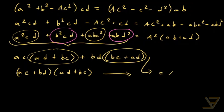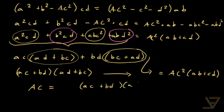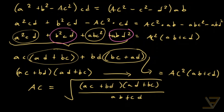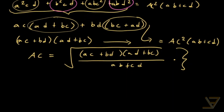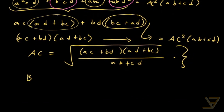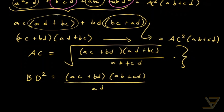So we have (ac + bd)·(ad + bc) = AC²·(ab + cd). Solving for AC, we get AC = √[(ac + bd)(ad + bc) / (ab + cd)]. I'll leave the symmetric derivation for BD to you.